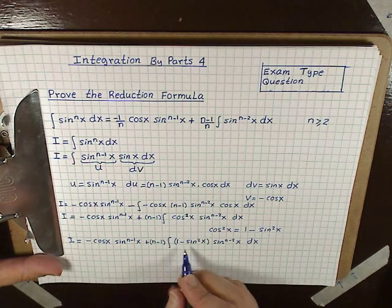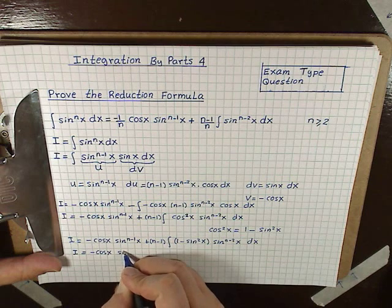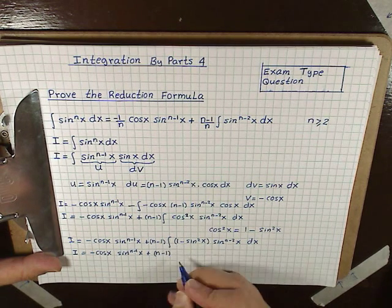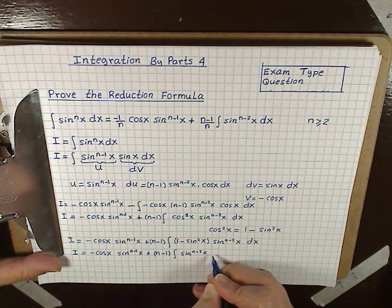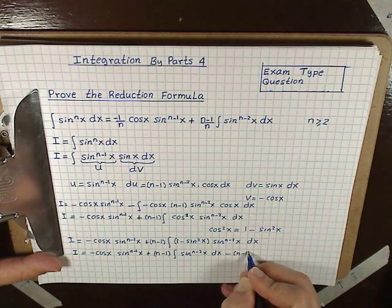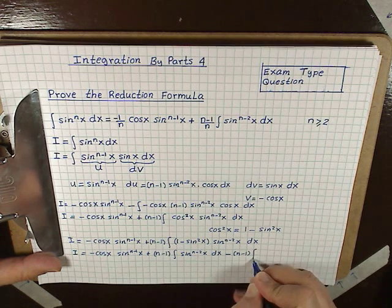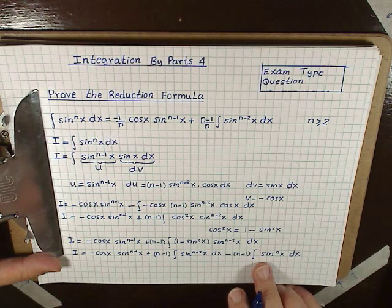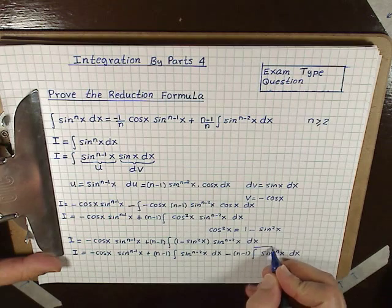Multiplying through and simplifying, we get I = -cos(x) sin^(n-1)(x) plus (n-1) times the integral of sin^(n-2)(x) dx, minus (n-1) times the integral of sin²(x) times sin^(n-2)(x) dx, which gives us the integral of sin^n(x) dx. This is the recursive nature of the problem, so let's call that last integral I.